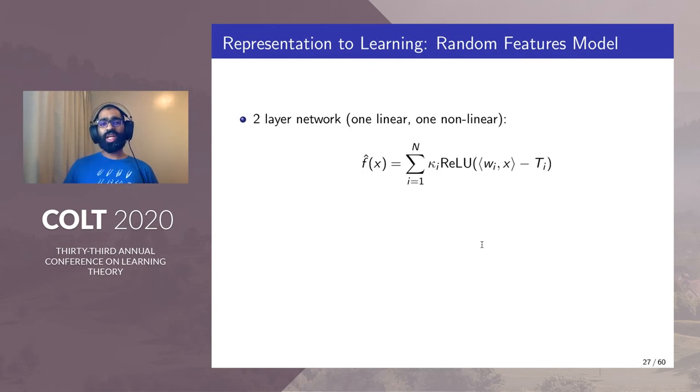We also state learning results which are an offshoot of the representation results in the following way. Suppose we use the random features model to do this. Suppose we have a two-layer neural network of this form given here.